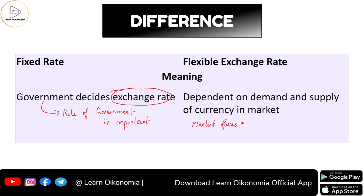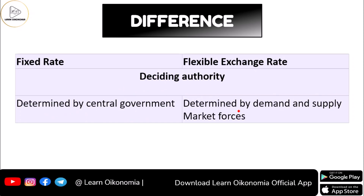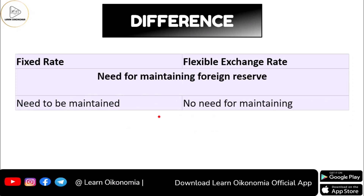The market forces would be adjusting and readjusting with each other, and thus the flexible exchange rate system works. Who is the deciding authority? In the case of the fixed exchange rate system, the central government decides everything — it fixes the rate and determines everything. In the flexible exchange rate system, the market forces of demand and supply decide whether the exchange rate should increase or decrease.